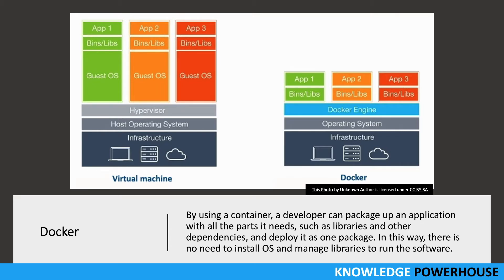Looking at this diagram: in a traditional setup you have infrastructure, a host operating system, then a hypervisor and virtual machine, then a guest operating system, and then your binaries and applications. There are many layers. With Docker, you have infrastructure, a Docker engine that encapsulates the operating system using its binaries, and you don't need to install a guest OS at all — just the Docker engine.